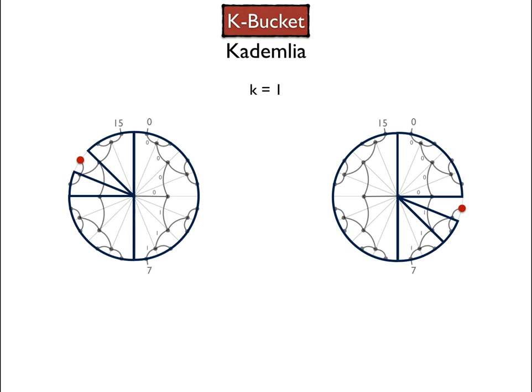The intuition behind the K buckets like this is that the address space that is covered by buckets that are closer to a particular node address is smaller. But since the number of nodes per bucket is constant, it means that we know of more nodes that are closer to us than nodes that are further away from us.